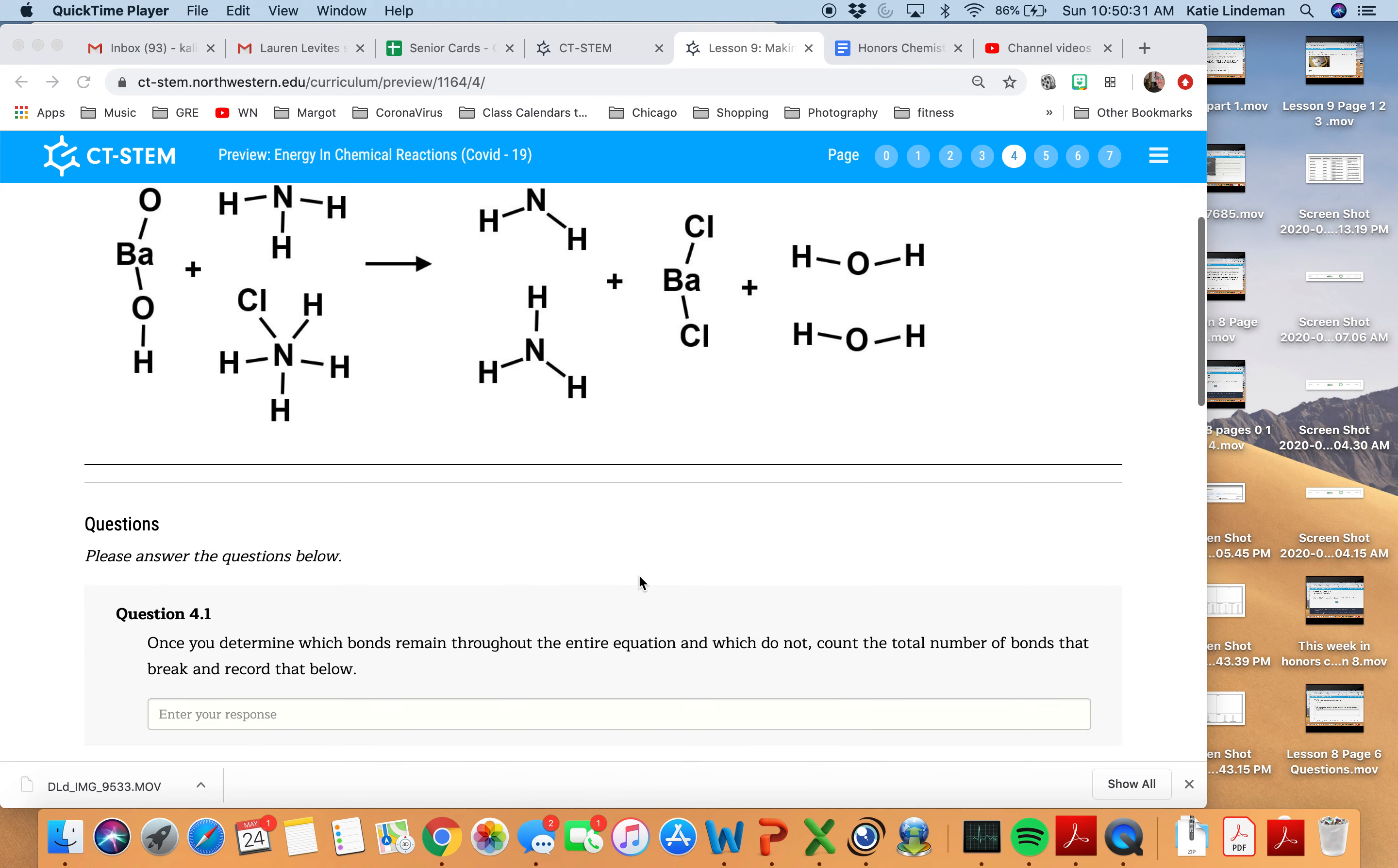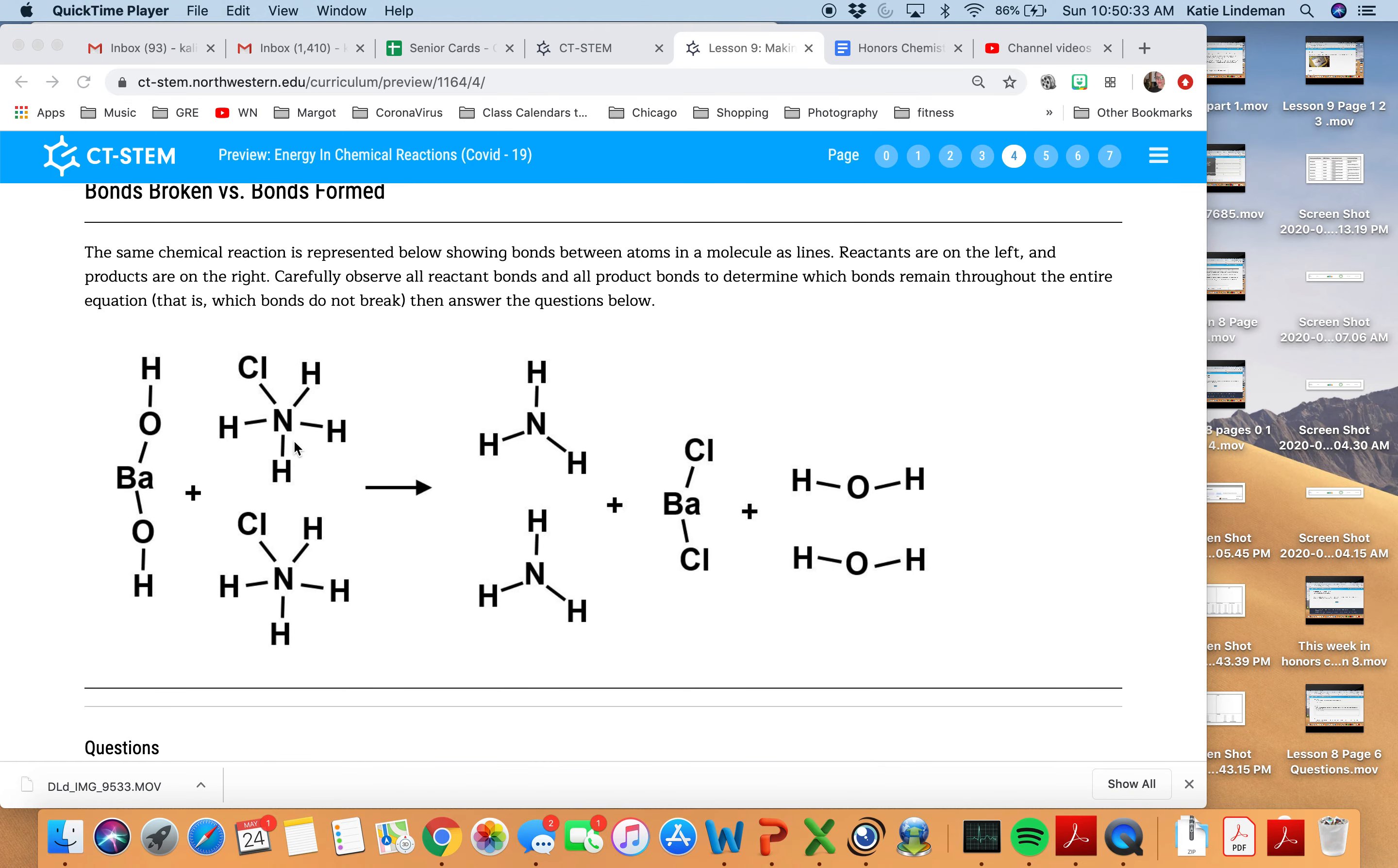But what you're asked to do here is look through and see what are the bonds that are the same on this side as they are on this side. So for example, this oxygen and hydrogen are attached to each other, and we have two of those. And then over here, if I look, I have one of those and then another one of those.